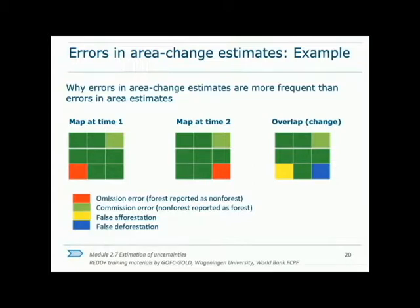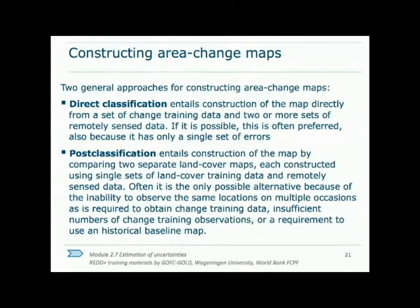This visual shows how two maps at two different time periods could appear correct in total forest or non-forest area, but individual errors in each map will be combined in the change map, making the change map have more errors than either individual map. For this reason, map differencing is not usually recommended as a means of obtaining activity data. Generally there are two ways of obtaining spatially explicit area change data: post-classification or map comparison, and direct classification, in which multi-temporal data is combined and change is directly classified.